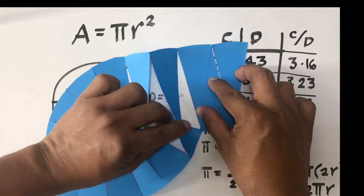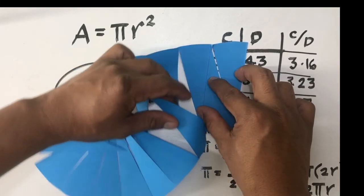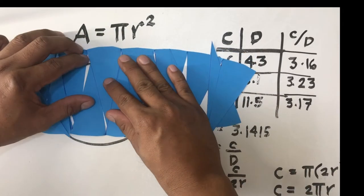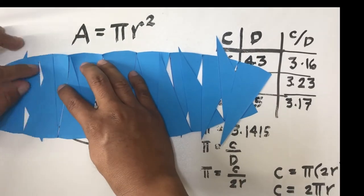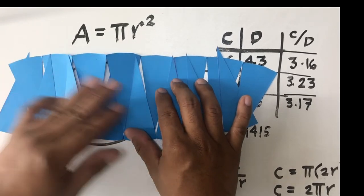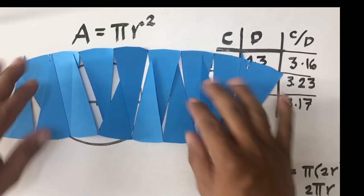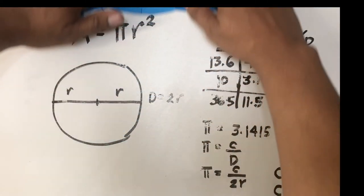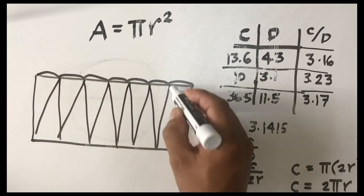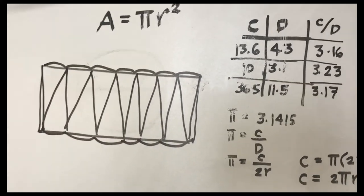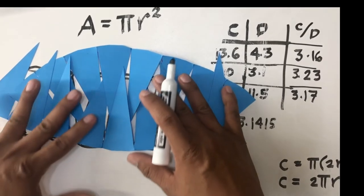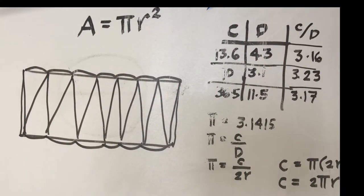We can arrange them alternately like this. If I'm going to draw this one, it will look like this. These alternating sectors of the circle will have a figure that may look like this.